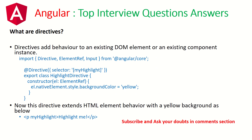The next question is: what are directives? Directives add behavior to an existing DOM element or an existing component instance. In the example shown, we are creating a directive using the @Directive decorator with a selector called 'myHighlight'. This is a simple directive that, in the constructor, adds a background color of yellow. We call it in the element by simply adding 'myHighlight' as an attribute on a paragraph.